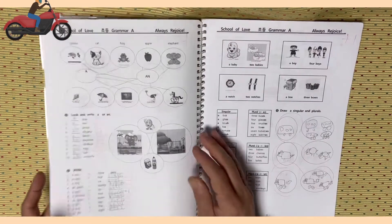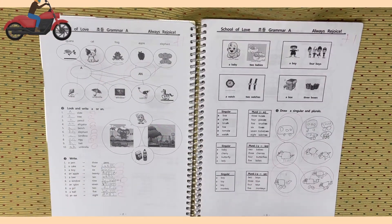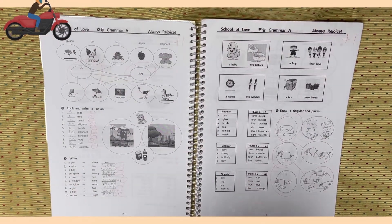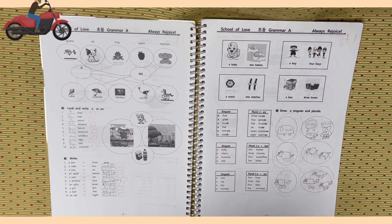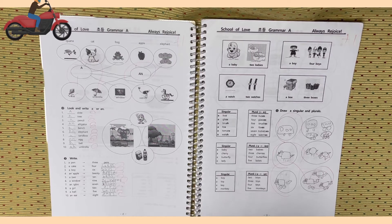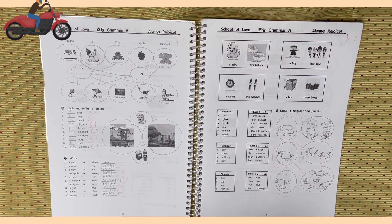Draw lines and match, page 2. Iguana, cat, frog, apple, elephant. Kite, umbrella, window, ostrich, zebra. 어떤 단어는 A로 가야 되고요. 어떤 단어는 AN으로 갑니다. 잘 생각해 보시면 됩니다. Activity 2. Look and write a or an.